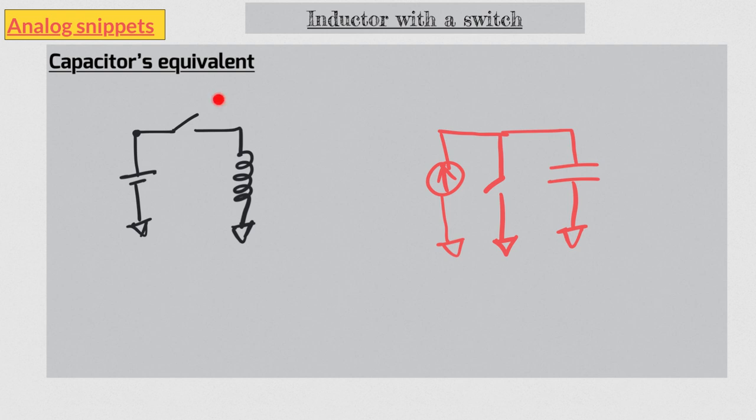In an ideal case when we open the switch in the inductor's case we saw an impulse in voltage in opposite direction. In capacitor's case when we close the switch we will see the impulse of current in opposite direction.